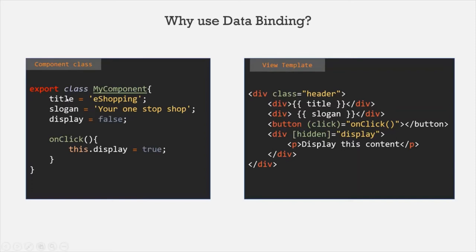Whenever the value of a property changes it will reflect in the view template, which means it will also reflect in the web page. So here we are passing data from the component class to the view template. It is also possible to pass data from the view template to the component class. For example, if we have a text box in the web page and a user enters a value, we can assign that value to a property of the component class. This is what data binding is — using data binding we can pass data from the component class to the view template or from the view template to its corresponding component class.